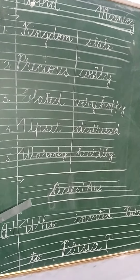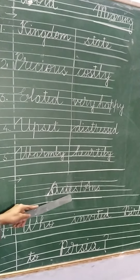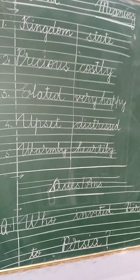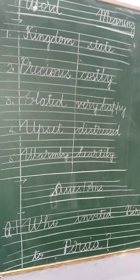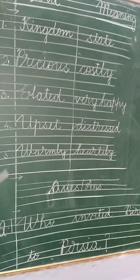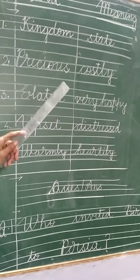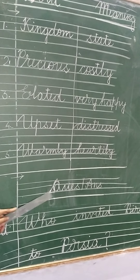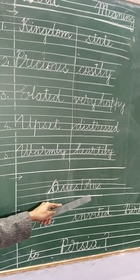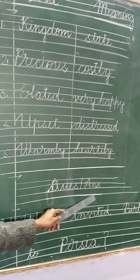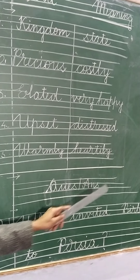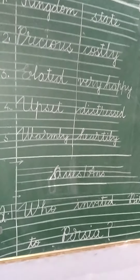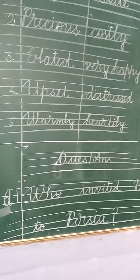Then come to the next question. If you have space, start from there. If not, come to the new page. Leave one line and then write the question and answer heading. Draw a line, leave one line once again, and write question number 1.